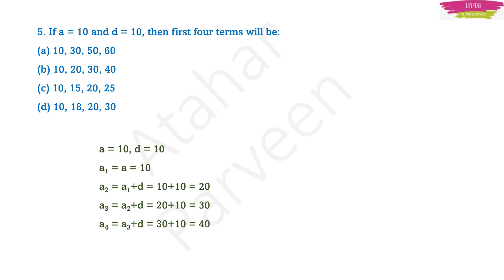Here in this case, the first 4 terms are 10, 20, 30, 40 — which is the correct answer.